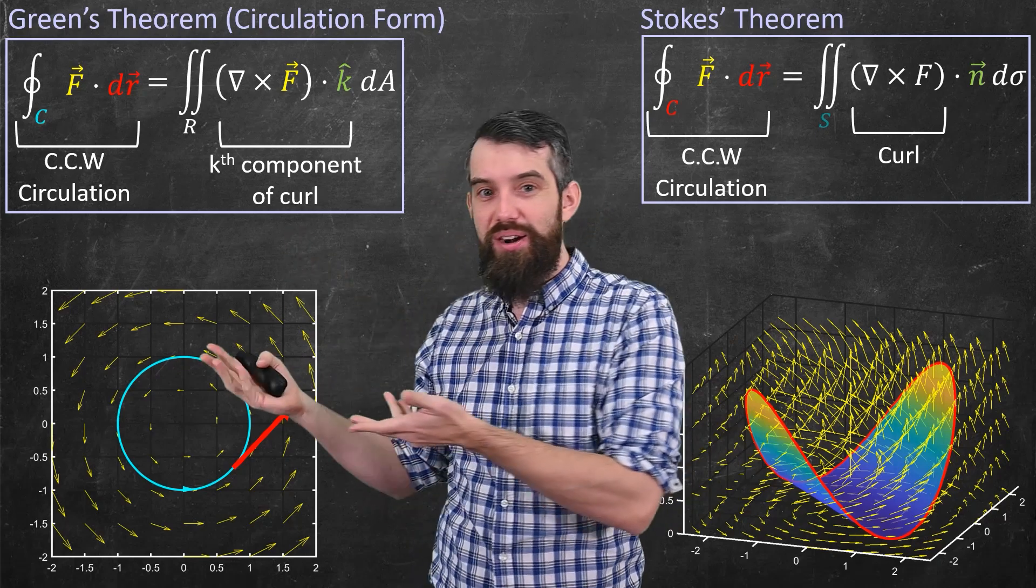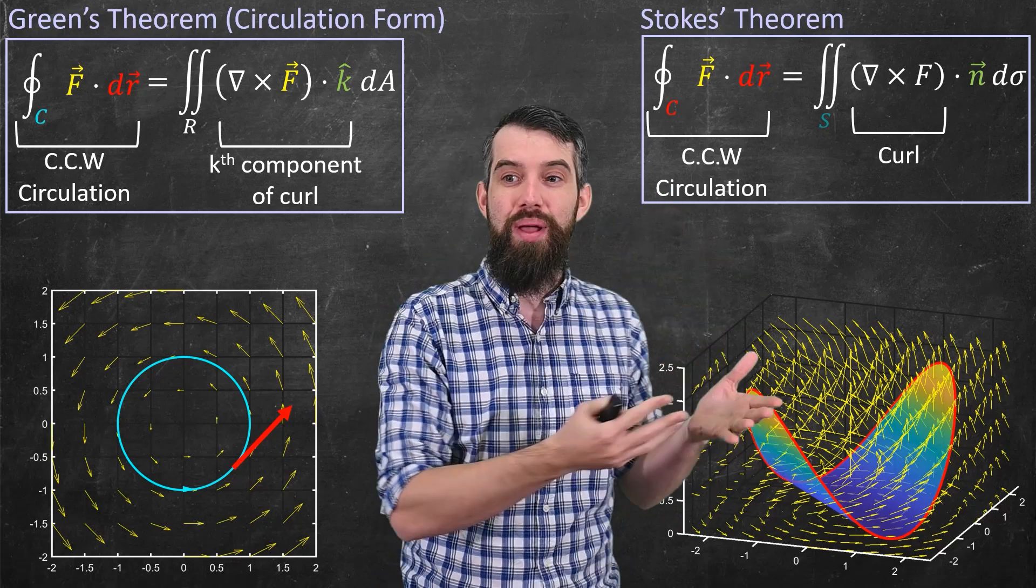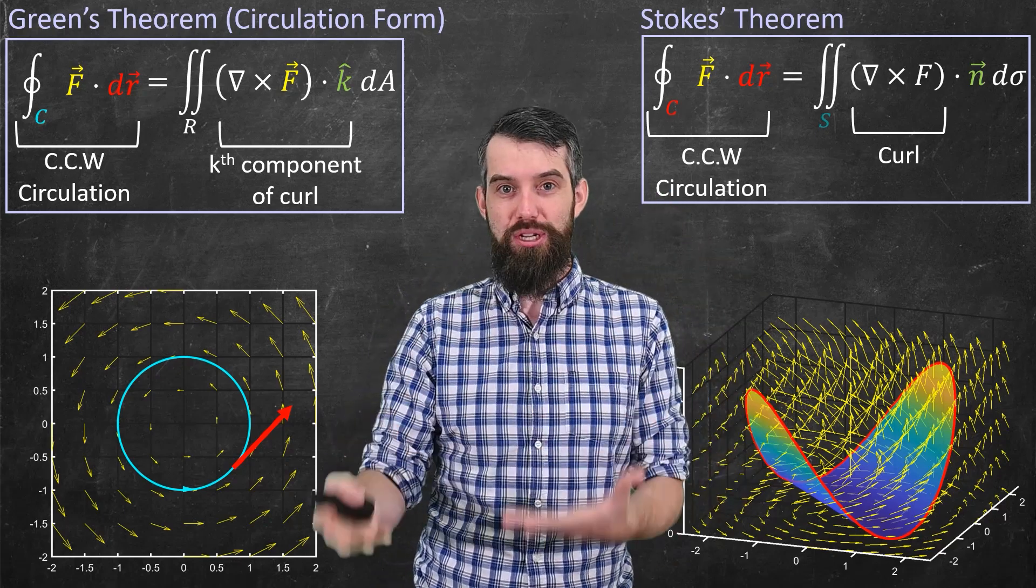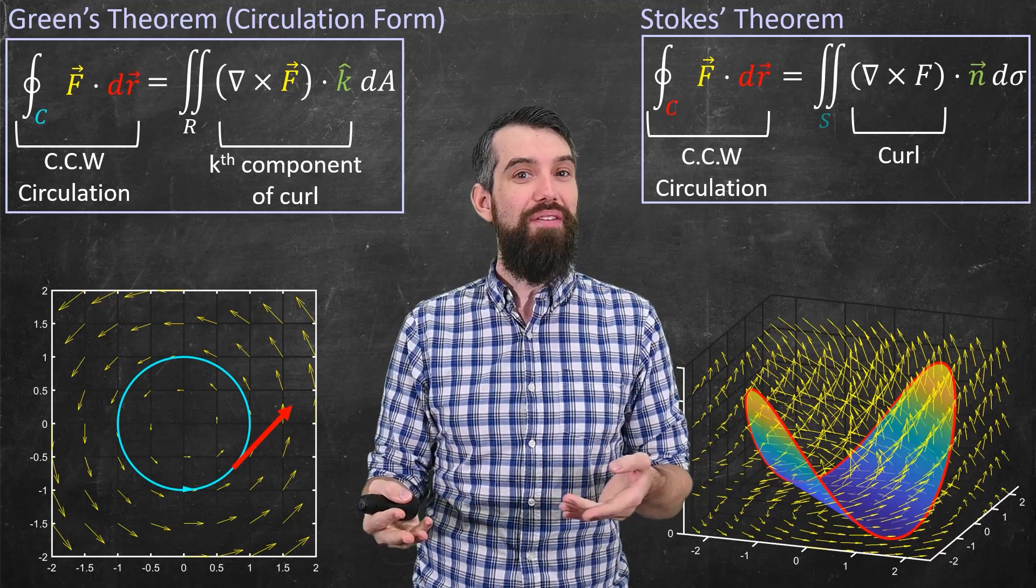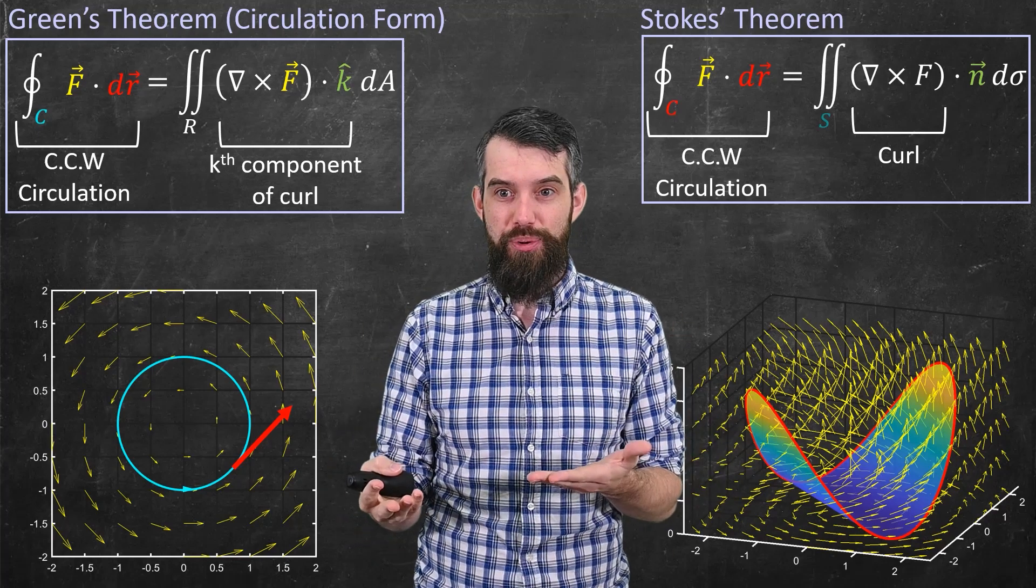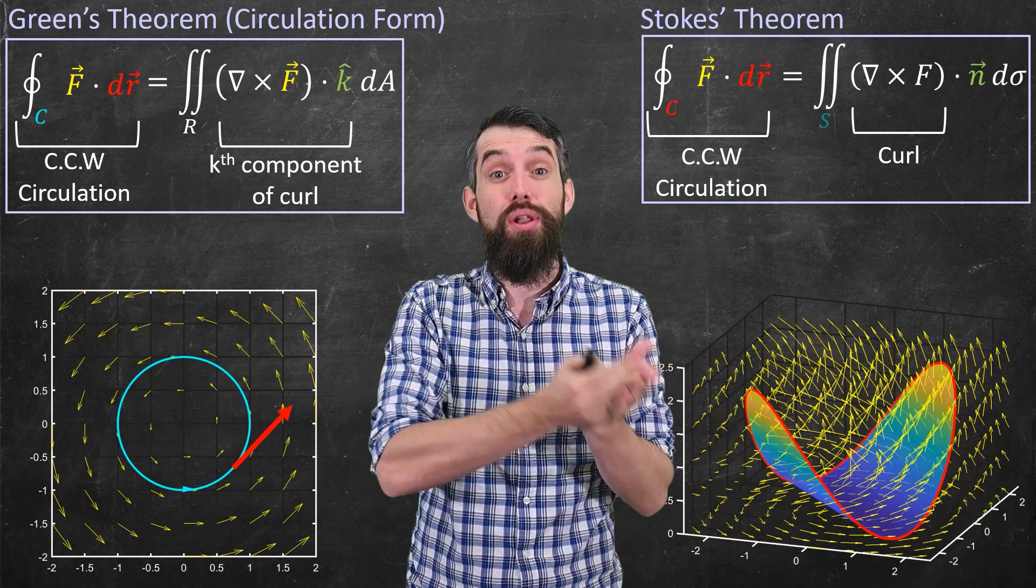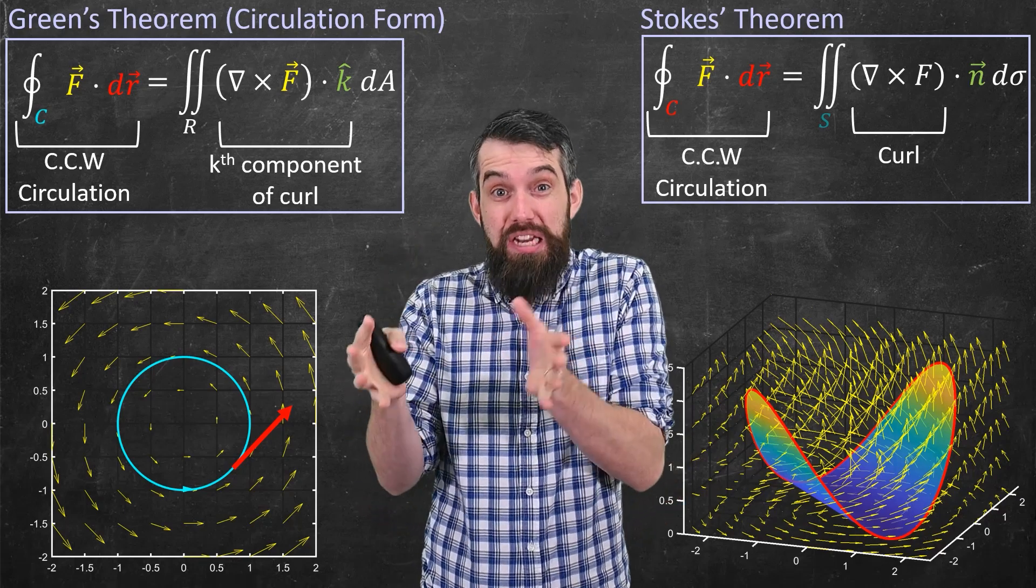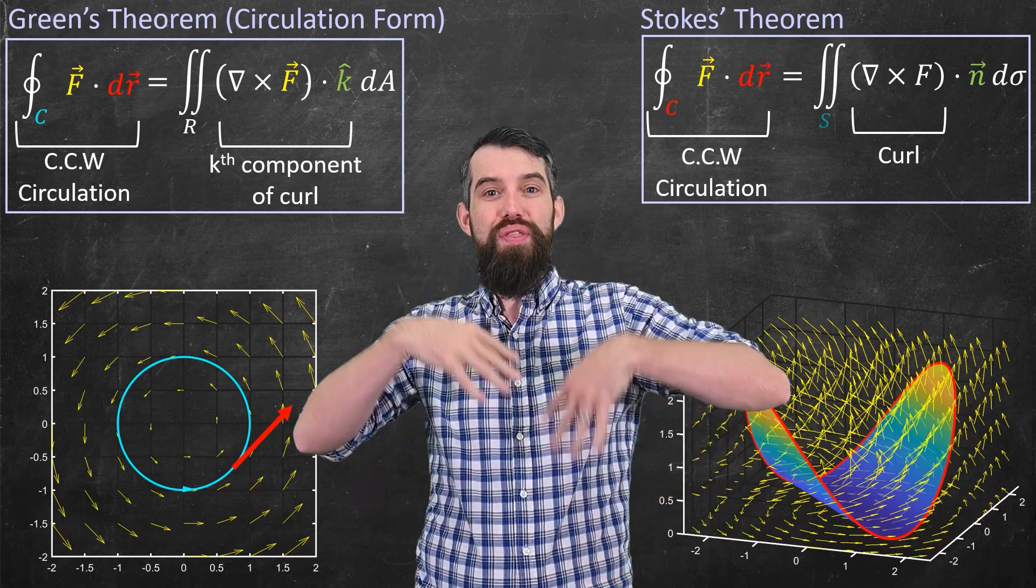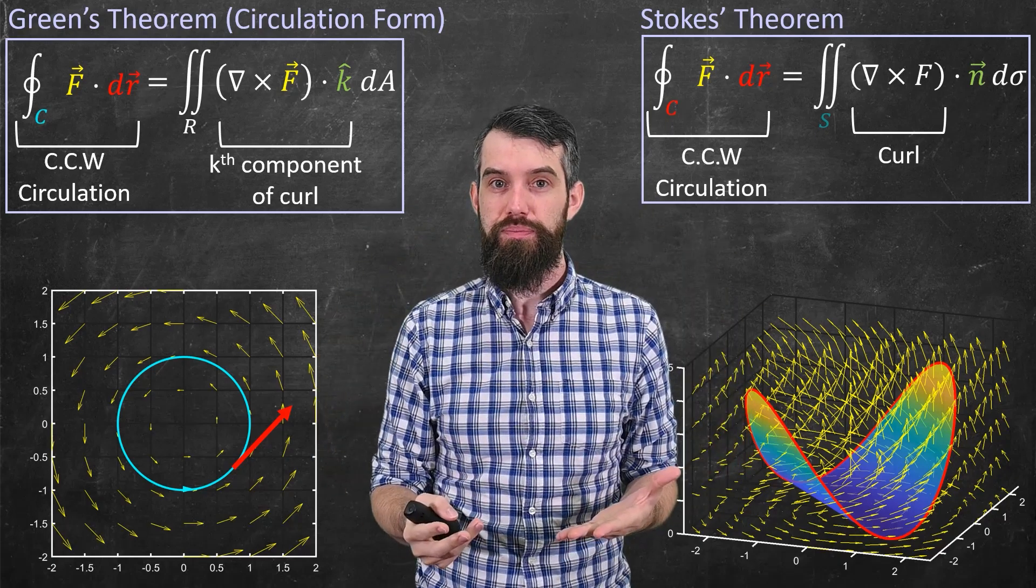Just as with Green's theorem and the Divergence theorem, we have a similar relationship with the other half of Green's theorem, called its circulation form, and Stokes' theorem. They're both talking about the counterclockwise circulation. Again, this property around the boundary can be written as adding up the local property of the curl, or k-component of curl for just two dimensions, over the entire domain.